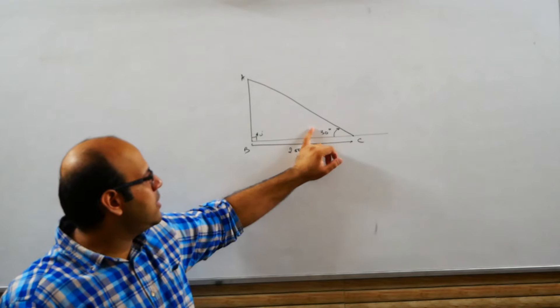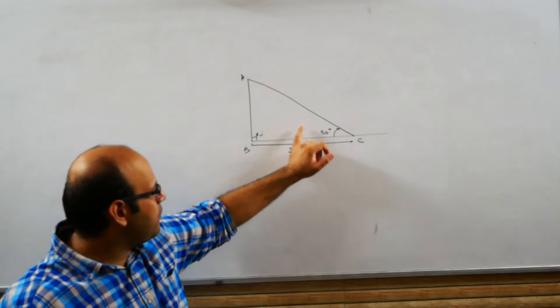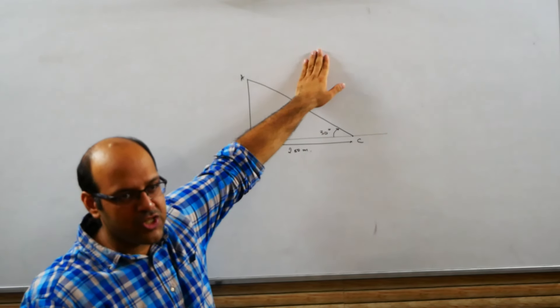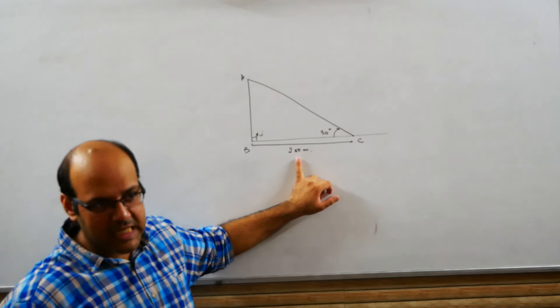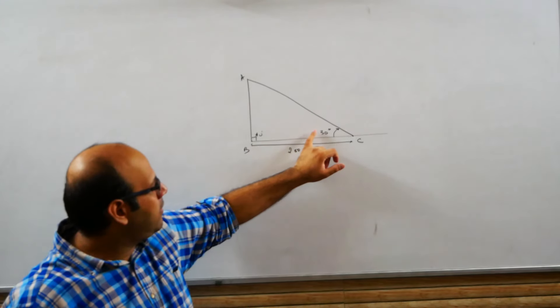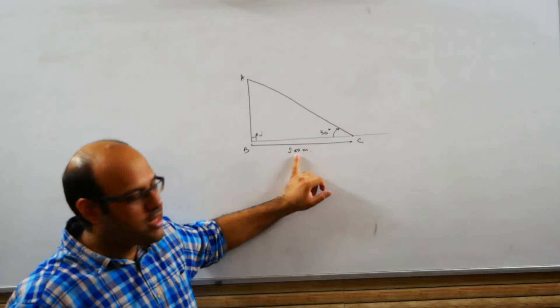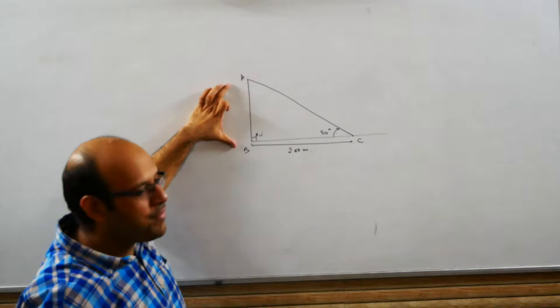Right? If I consider 30 degrees angle, the adjacent side, this is the height, the adjacent side, this is my base, and the side which I have to calculate which is perpendicular.